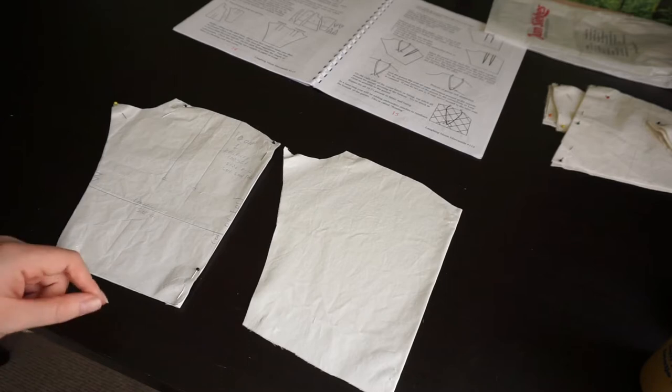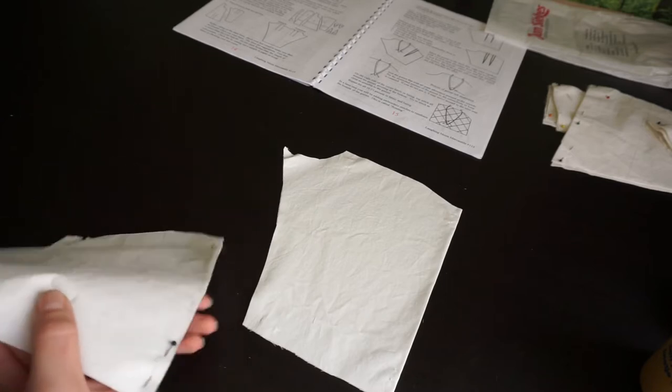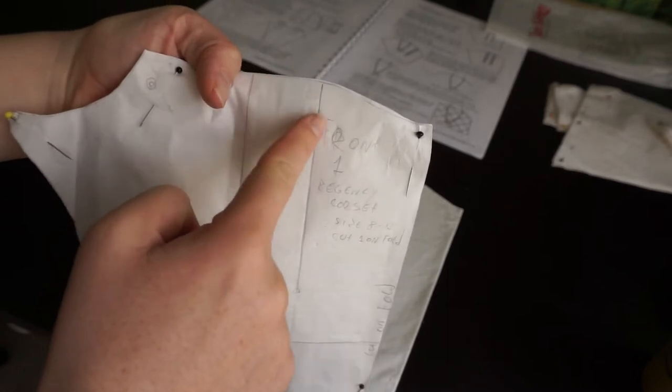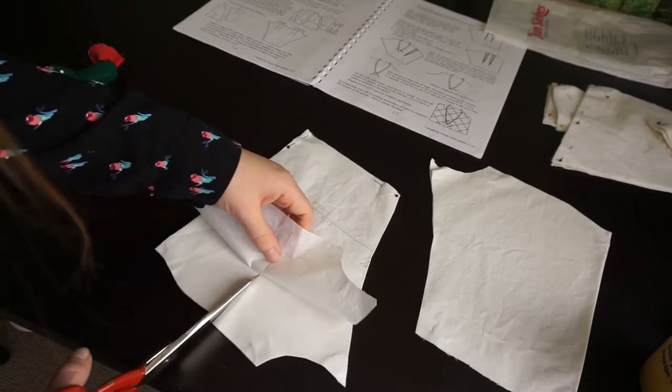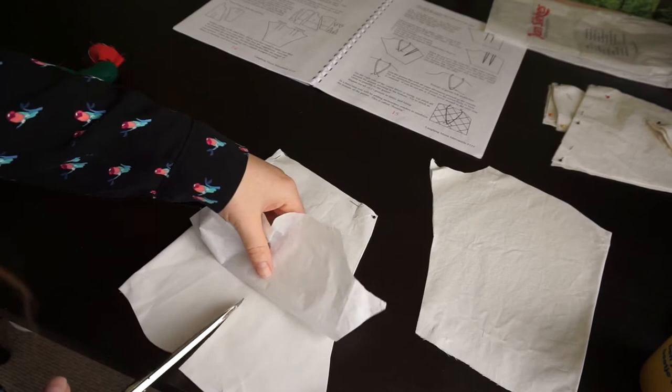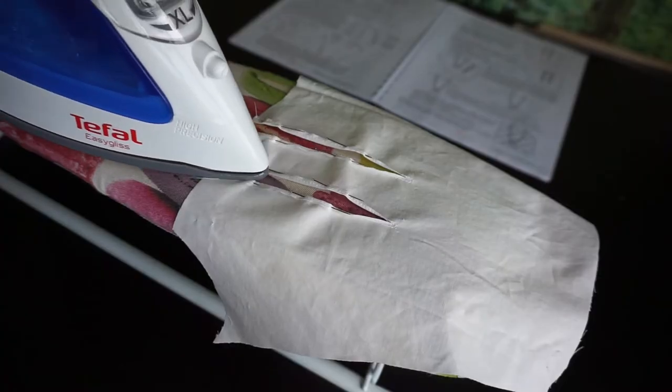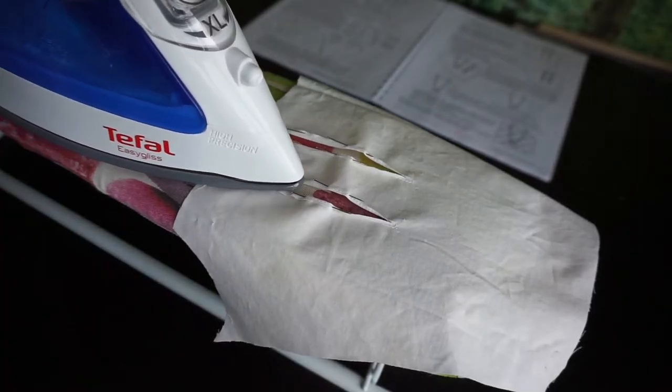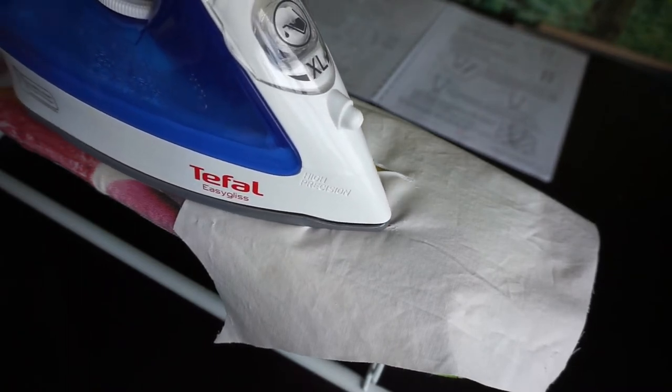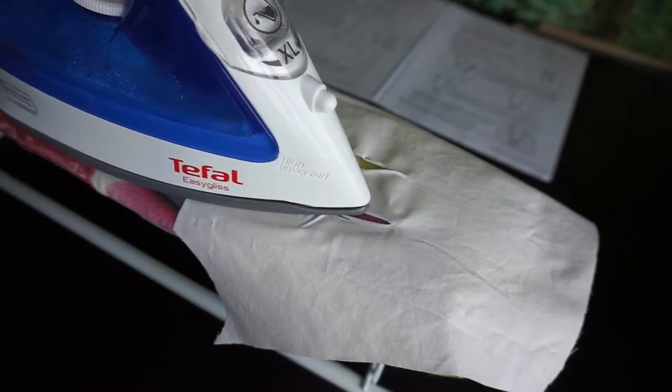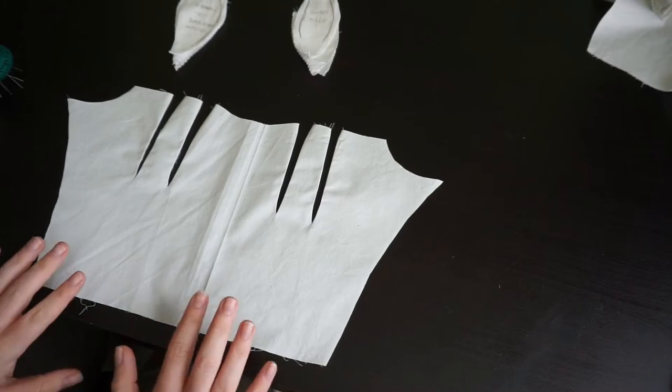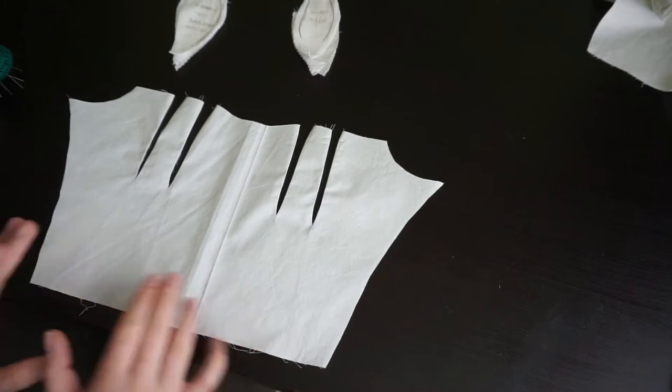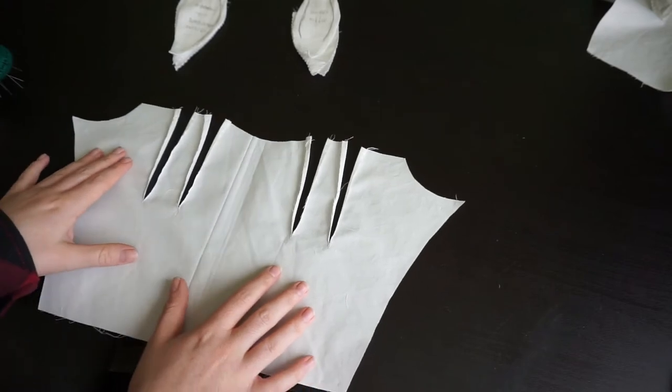We're going to start by inserting the gussets. The gussets will end up at the location of these lines. So first I'll be slashing them, stay-stitching around the edge, and then inserting the gusset. After cutting along the slash lines, the seam allowance was folded over to the wrong side, from half a centimeter at the top to none at the bottom. Then it is time to insert the gusset into the stays.